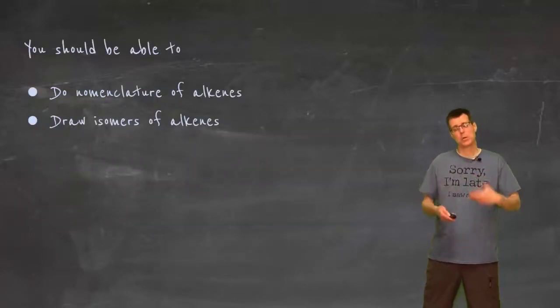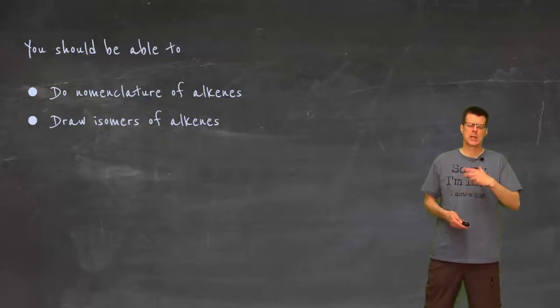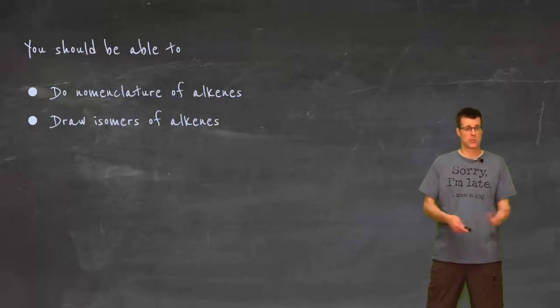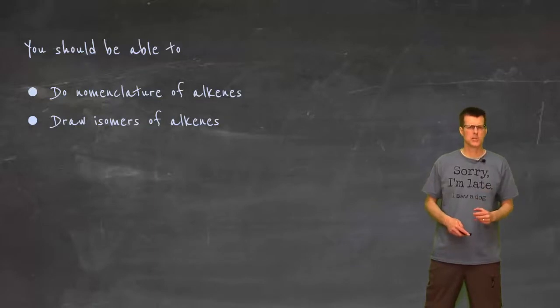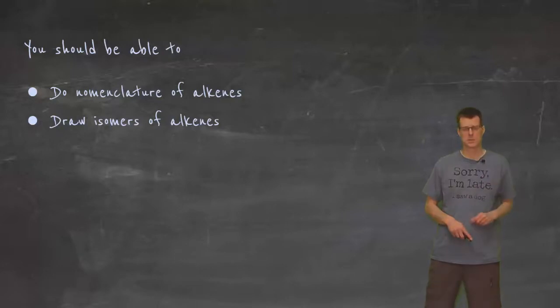At this point, obviously, you should be able to recognize an alkene. You should be able to do most of the nomenclature of an alkene. I know we didn't go from the name to the structure, but I think once you know how to do name to structure of anything, the name to structure of an alkene is going to be pretty straightforward. You should also be able to draw some isomers of alkenes. And then, whatever else we get to do with them, alkenes are going to be really important for us in terms of being able to do the chemistry. They're quite a reactive functional group, so they're really important for that.